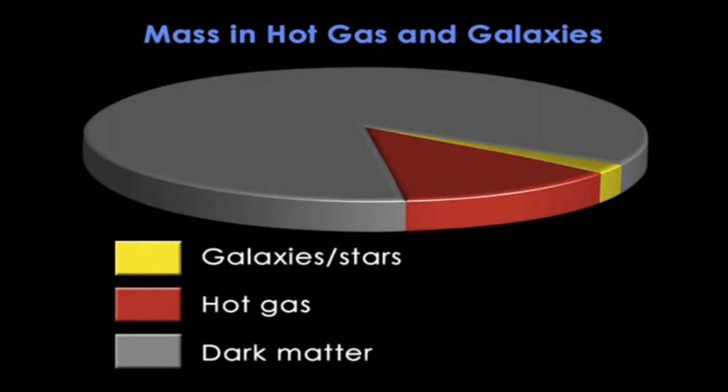It's important to check that the mass of the atmosphere itself isn't dominating the cluster mass — and it turns out it doesn't. This graph shows the breakdown of the three components: galaxies in yellow, the hot gas in red, and dark matter in grey. The hot gas does weigh more than the galaxies, but the dark matter is five times heavier than both these put together.